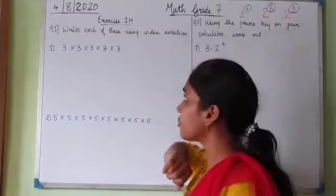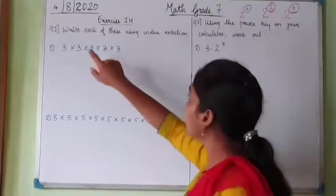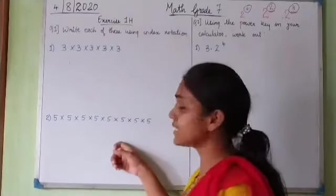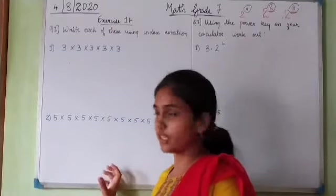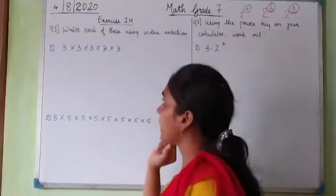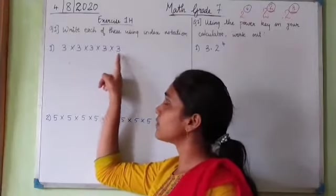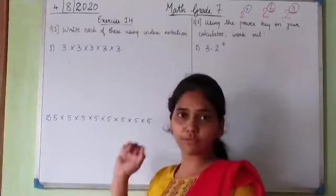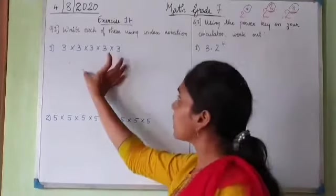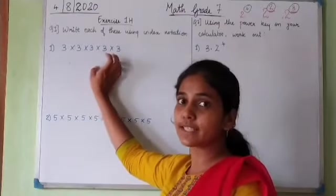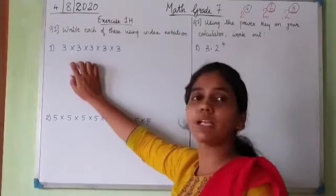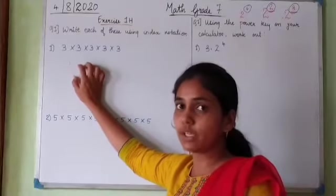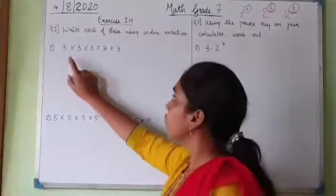Let's go to exercise 1H. The first question is: write each of these using index notation. In the first example, the number 3 is multiplied to itself some number of times. The number being multiplied has to multiply by itself only — only then we can write its index notation.